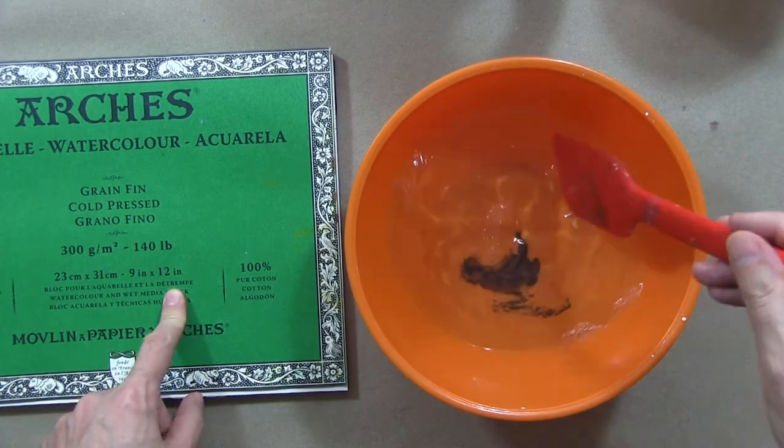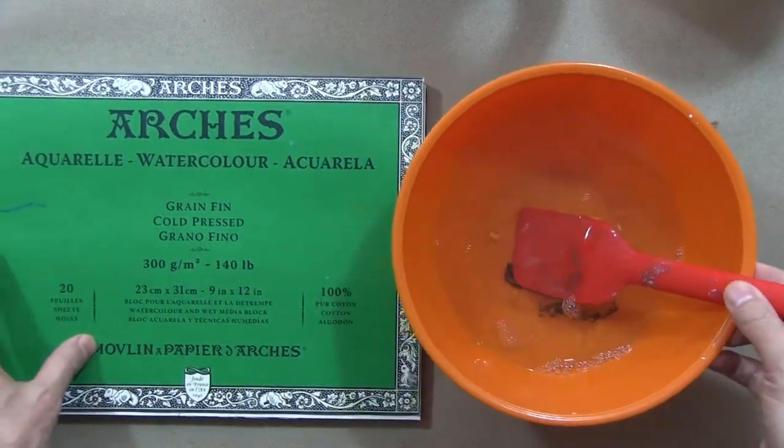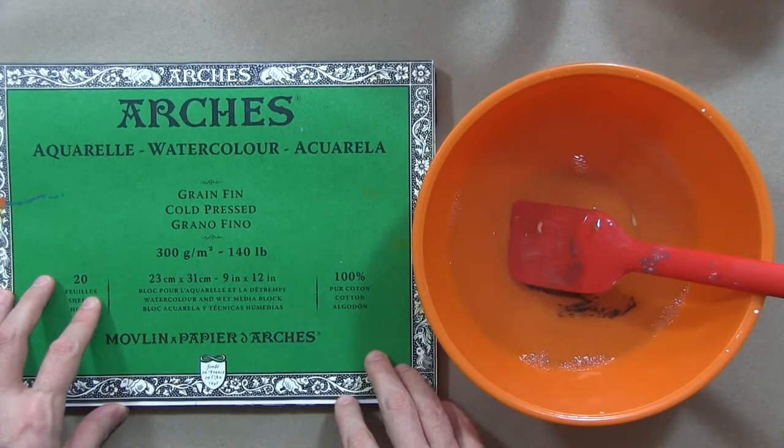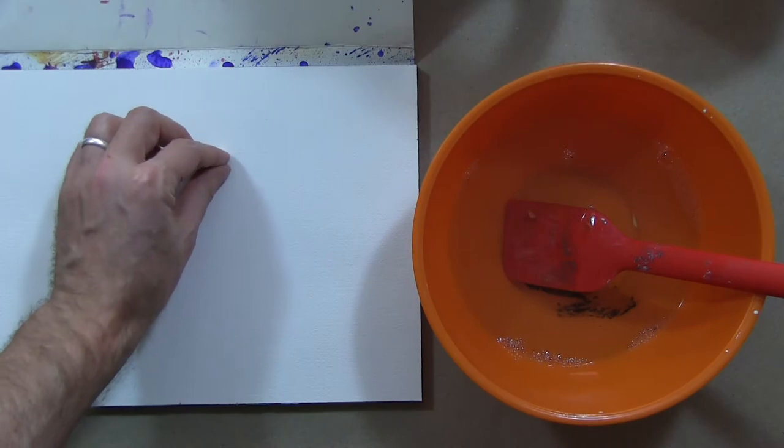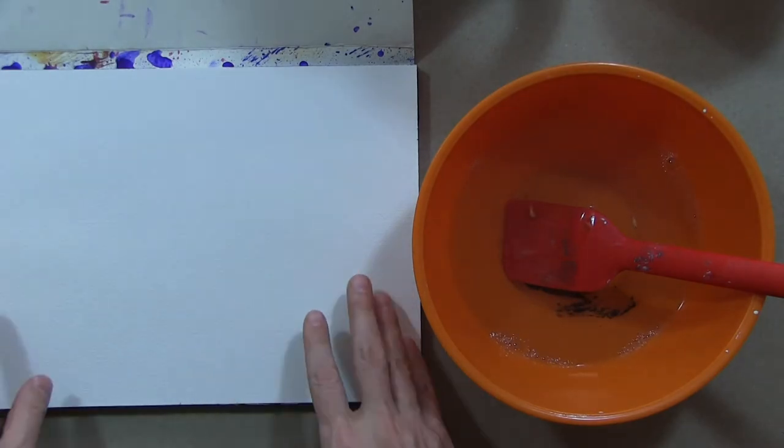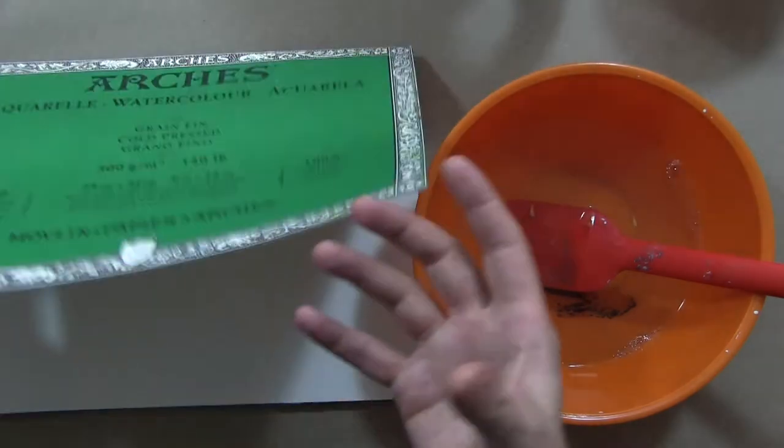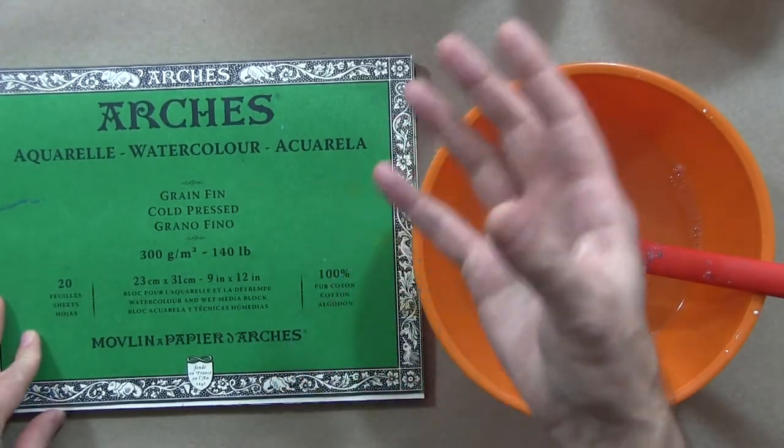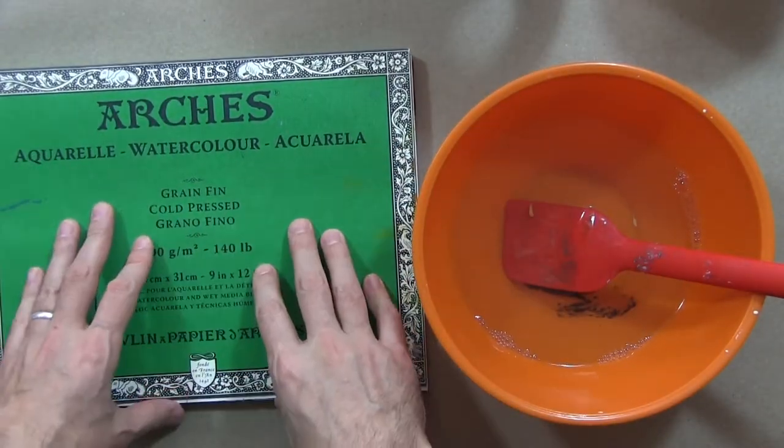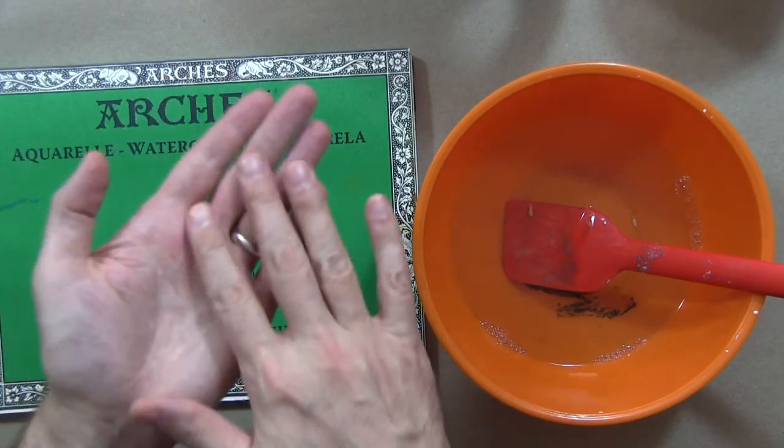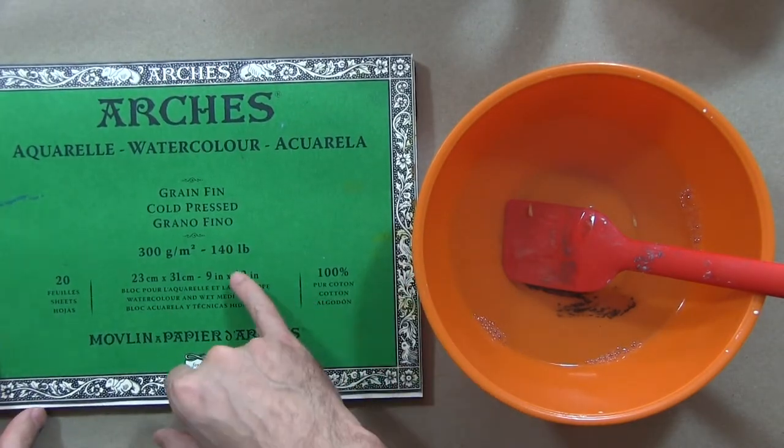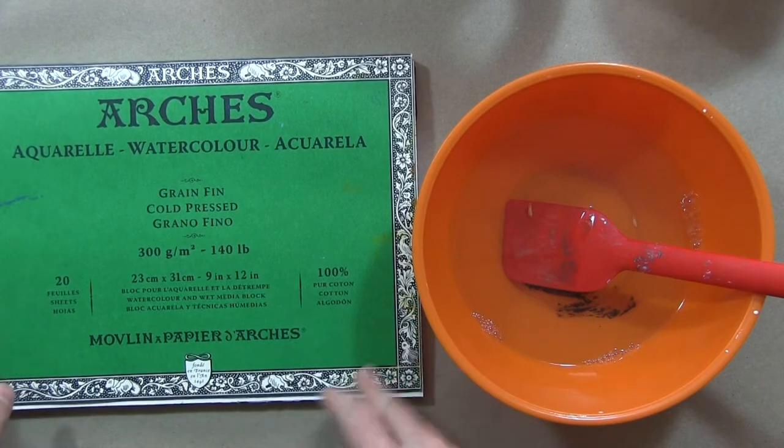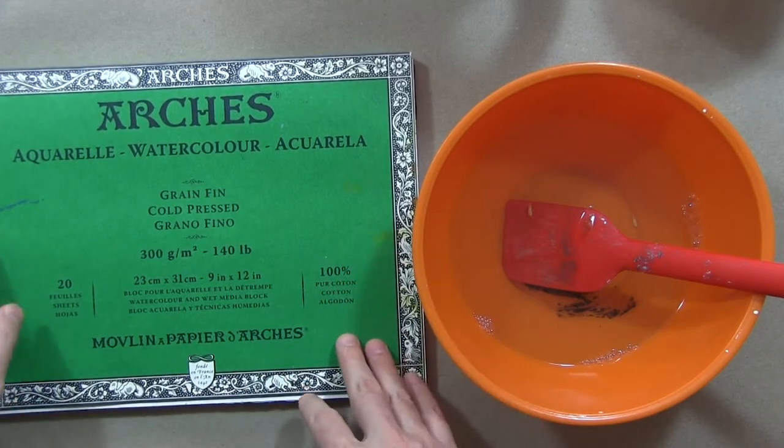Let me take a moment to talk about the Arches paper. I've used this for a few other things. What it is is pre-stretched cold press watercolor paper. Cold press refers to the process, but for our purposes it means there's a rough surface to the paper. It's a very high quality heavy paper made to absorb water.